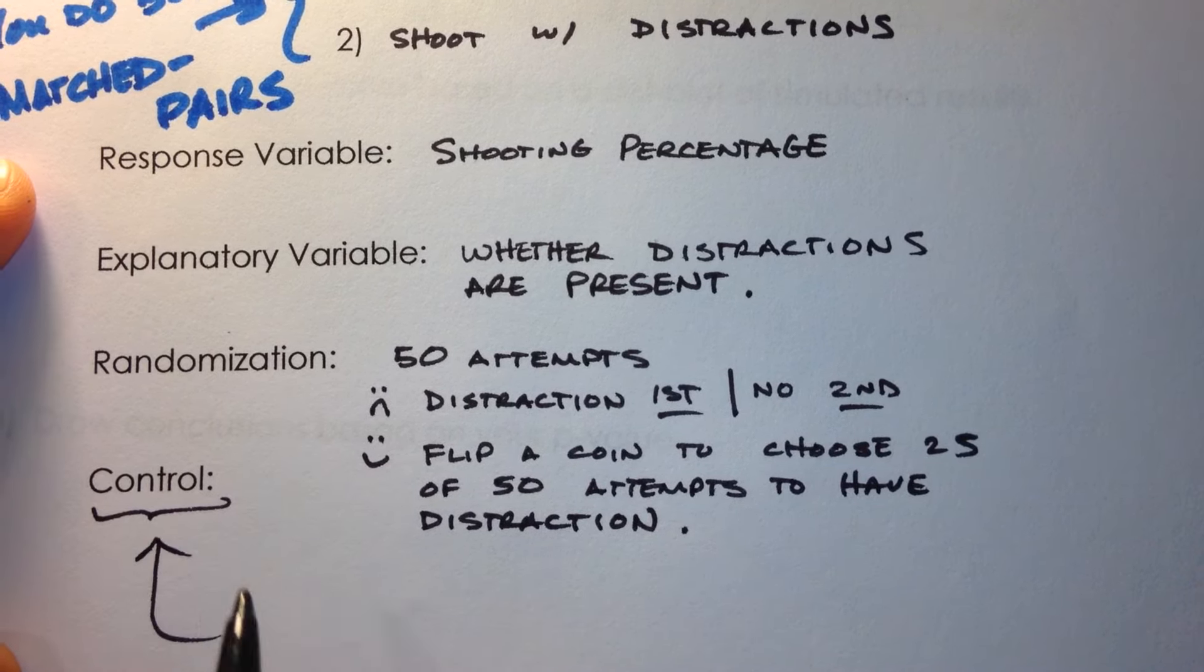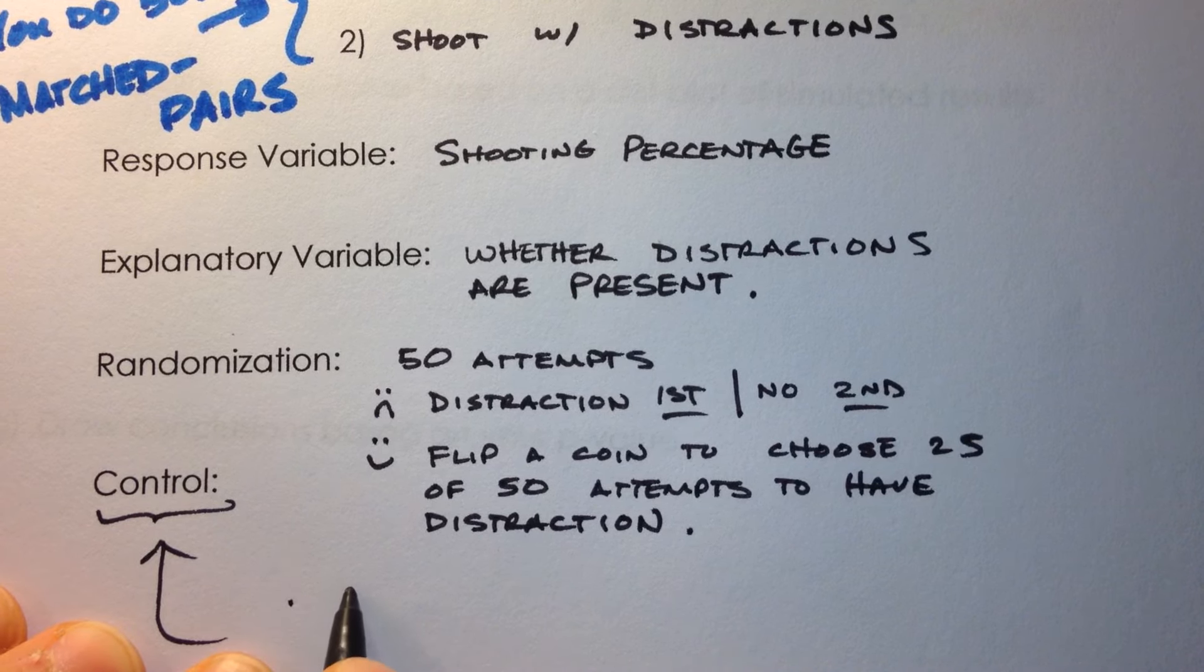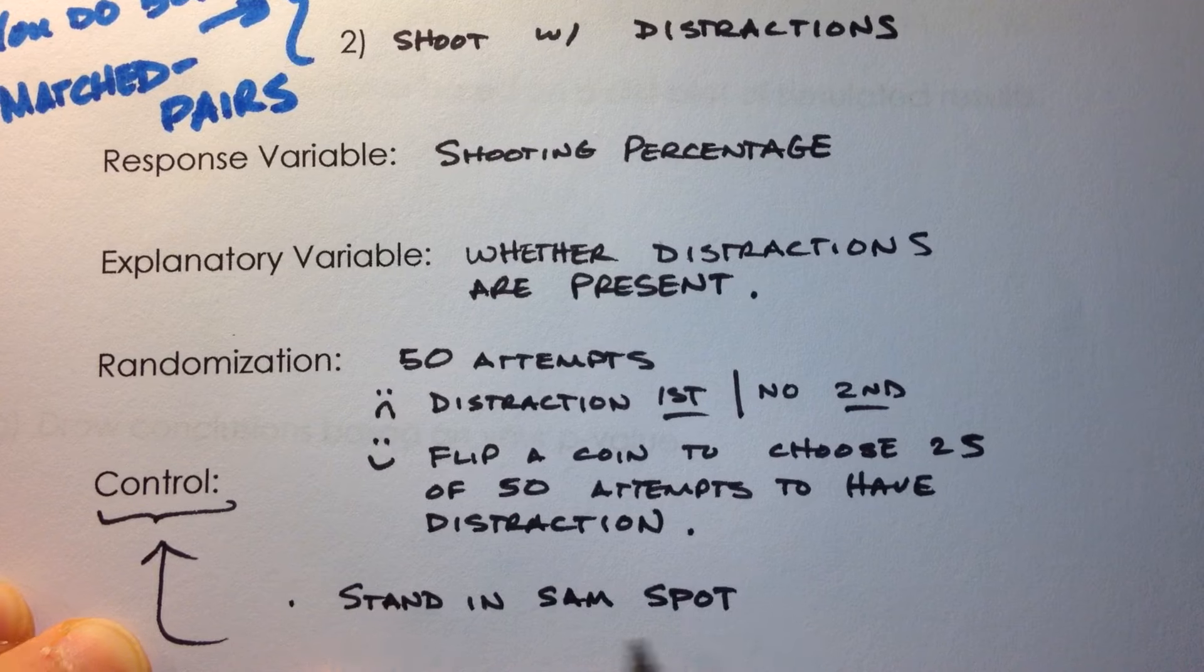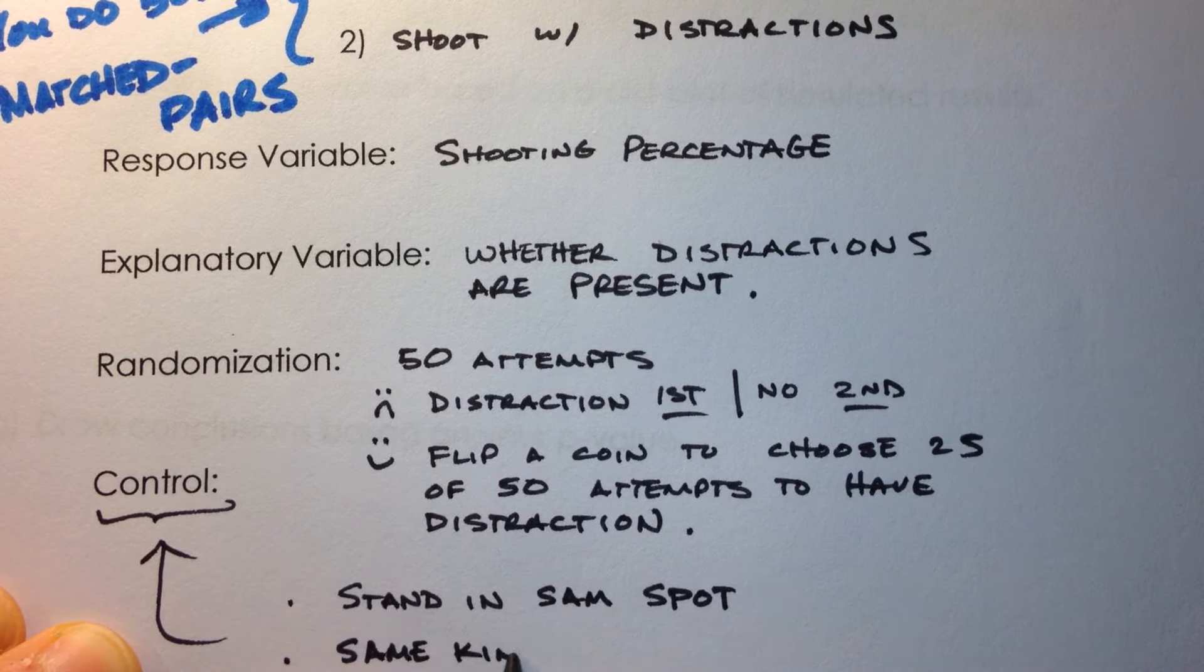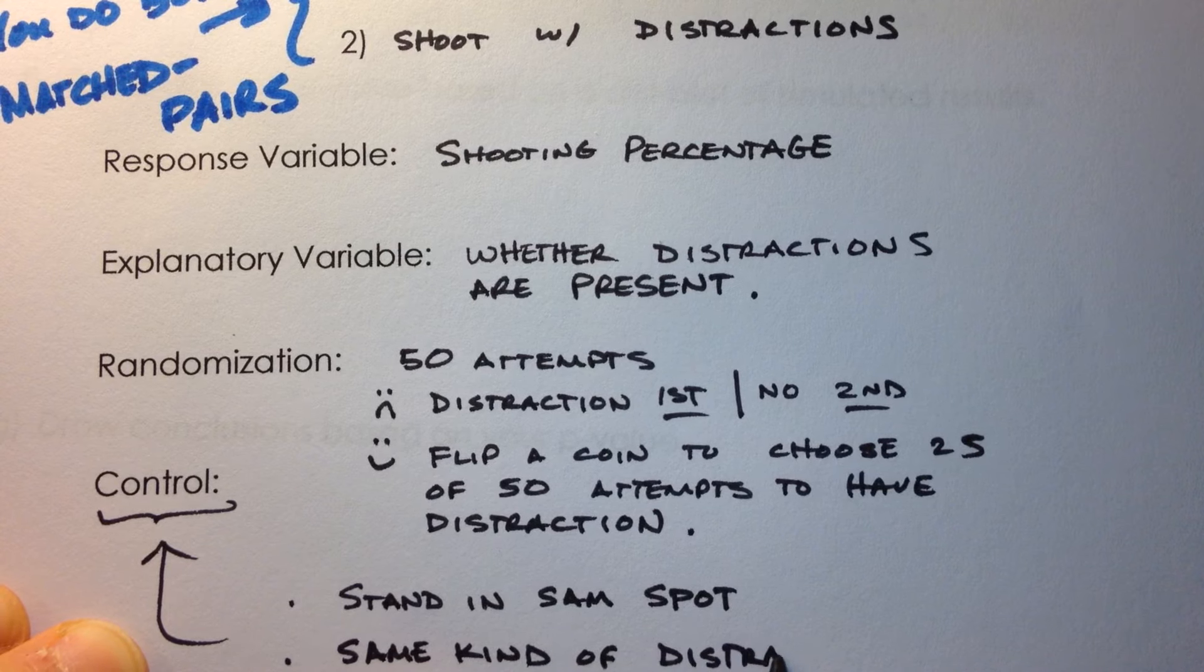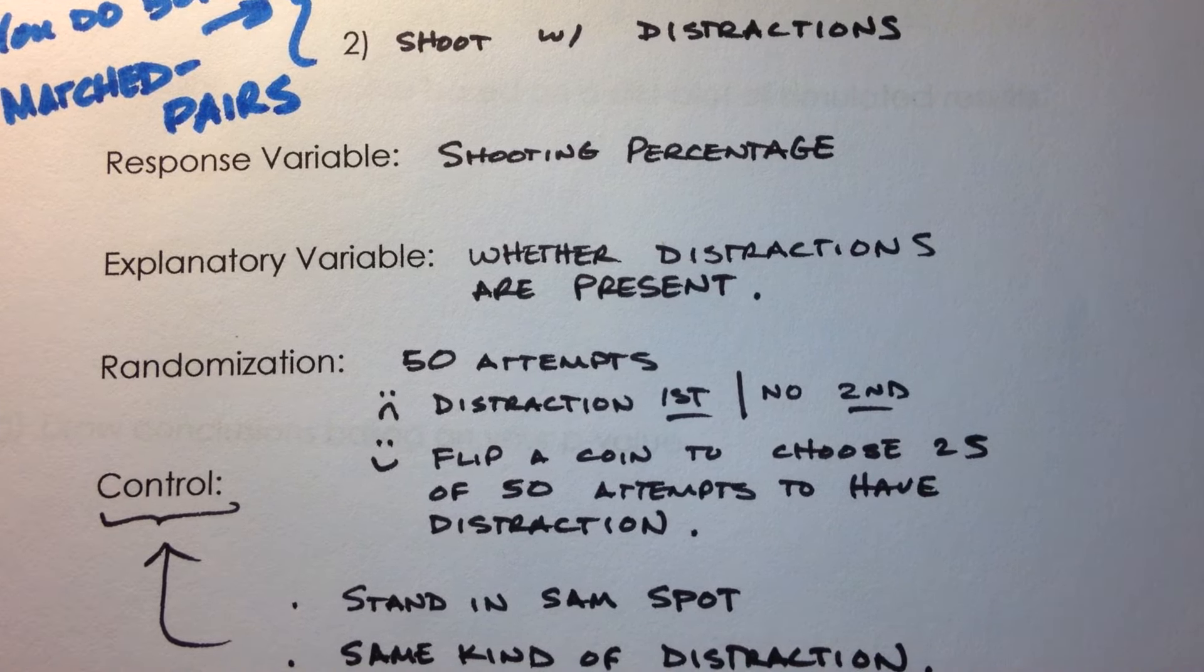We also need to control. So think about things that we need to be consistent in this case. One is that we would need to always stand in the same place. Same kind of distraction. We'll leave it right there, but there's probably more of those to think about.